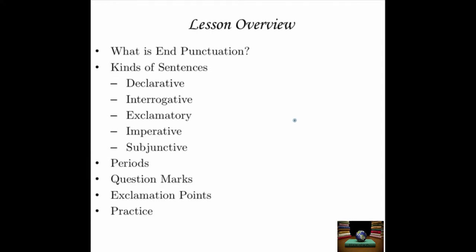We're going to look at the question of what end punctuation actually is. It pretty much only boils down to about three options. We're going to look at the kinds of sentences which require different kinds of punctuation. We're going to look at declarative sentences, interrogative, exclamatory, imperative, and subjunctive. They all take different punctuation.